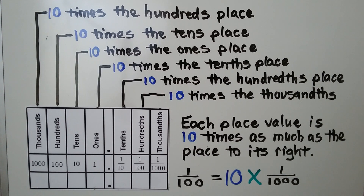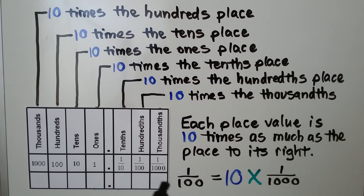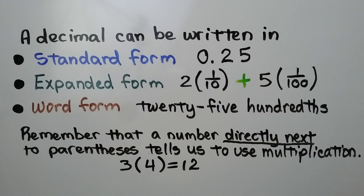So one hundredth is equal to ten times one thousandth. A decimal can be written in standard form, expanded form, or word form.